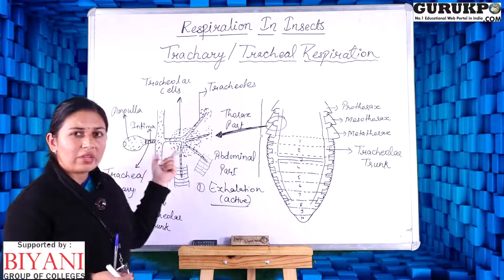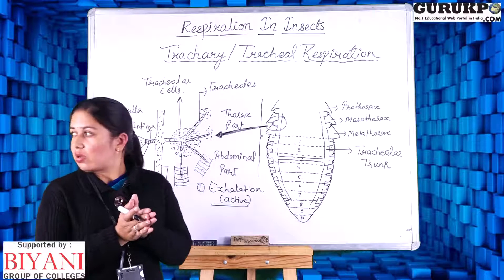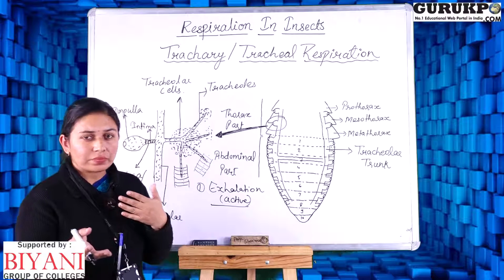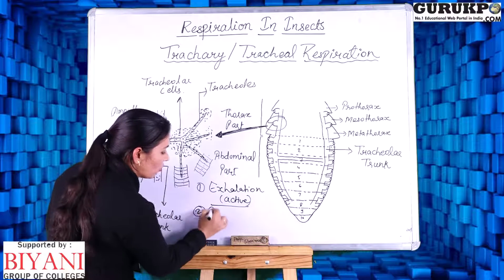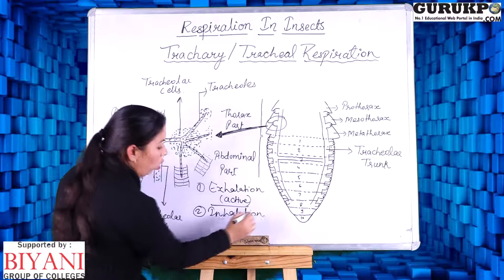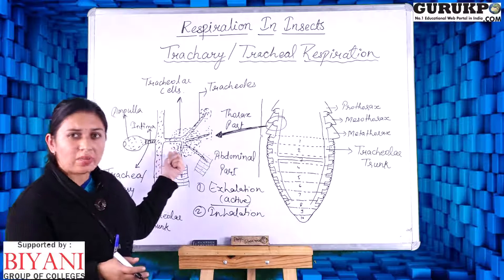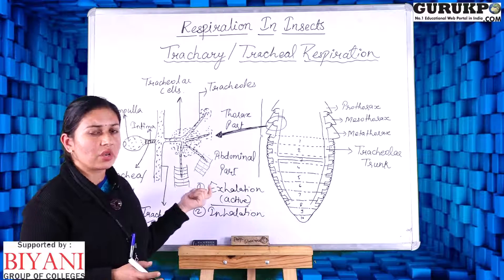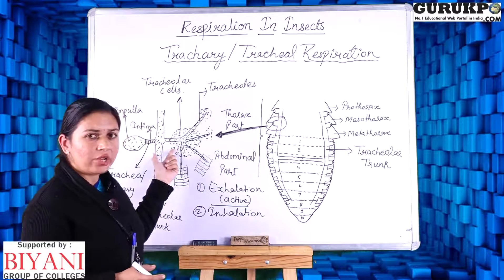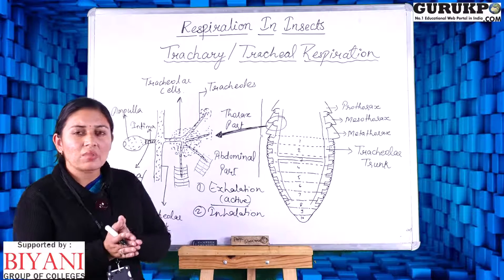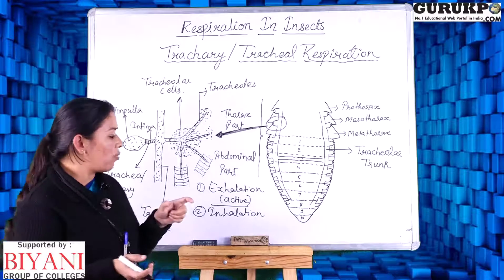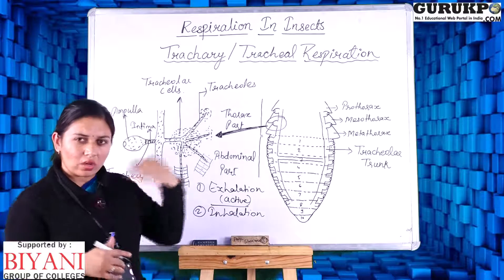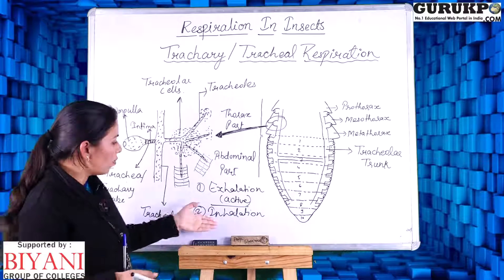The tergosternal muscles present in the tracheary tubes contract at the time of exhalation, and the air present in the tracheary tubes is exhaled out. At the time of inhalation, the tergosternal muscles — which are the important muscles that assist in both exhalation and inhalation — relax, and air passes inside through the spiracles and goes to the tissues and cells. This is a passive process.